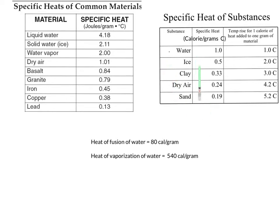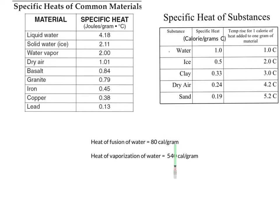We will be using calories per gram degree Celsius in our future problems. To recap the standards: the heat of fusion of water is 80 calories per gram, and the heat of vaporization of water is 540 calories per gram.